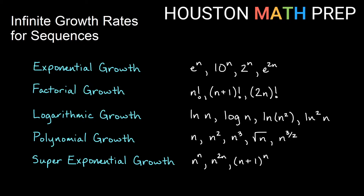So I've just listed some families — five families here, listed alphabetically. One of them being exponential growth: we have some base that is bigger than 1 to the nth power, that's going to be exponential growth. e to the n, 10 to the n, 2 to the n, etc. — those are types of exponential growth.